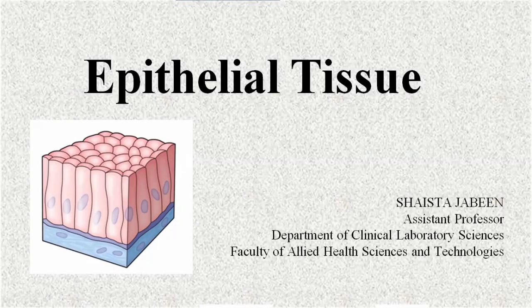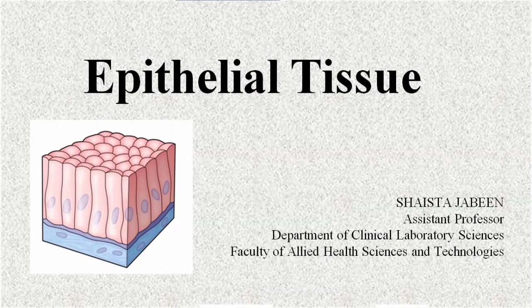This video is about epithelial tissue. Epithelial tissue is one of the types of tissue. In epithelial tissue, the same type of cells are closely packed together to form a group of cells, forming a thin lining. These cells have very little intercellular spaces between them, and inside these spaces, the amount of matrix is also very less.